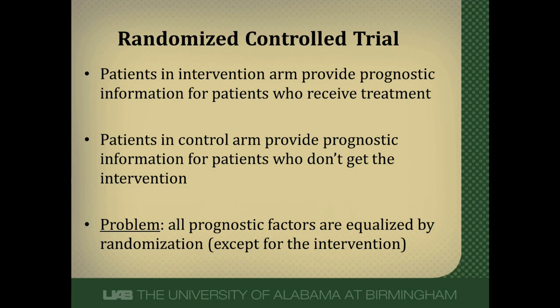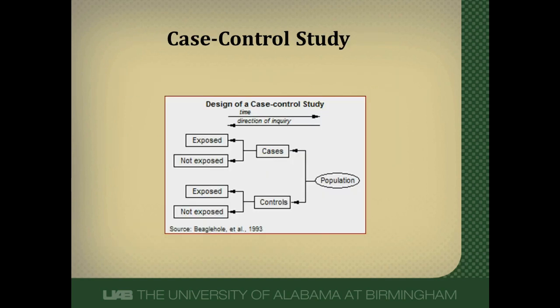Case control studies are another type of observational study — we don't do anything as researchers, we just observe people and look for relationships. In a case control study, we start with cases — patients with disease — and controls — patients without disease — and go backwards in time to look for exposures to risk factors. Prognostically, we could take people who had some outcome, such as cancer recurrence as our cases, and lack of recurrence as our controls, then look backward at a variety of prognostic factors to see which are associated with recurrence or not.